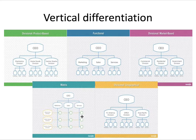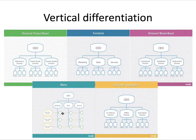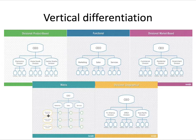Instead, what we started to see is what's called a matrix structure, where you have not just vertical differentiation but also horizontal differentiation. One benefit of vertical differentiation is clarity — if you're in North America, you report to the North America division; if you're in marketing, you report to the head of marketing. But in a matrix, it can become very difficult: you might not know whether to report to the head of marketing or the head of the electronics division, leading to the problem of disunity of command.